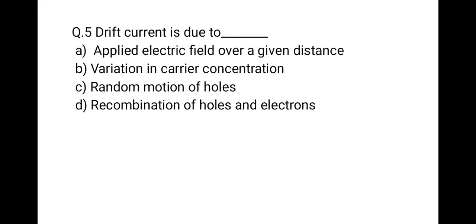Question 5: Drift current is due to — first, applied electric field over a given distance; second, variation in carrier concentration; third, random motion of holes; fourth, recombination of holes and electrons. The correct answer is: applied electric field over a given distance.